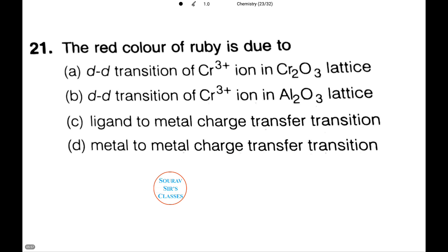Now we need to figure out how the red color of ruby is formed. We are given four cases. In ruby, there are chromium 3+ ions which are present in Al2O3 lattice as impurities. Thus, due to d-d transition of chromium 3+ ions, it imparts this red color of the ruby crystal. Our answer will be option B.